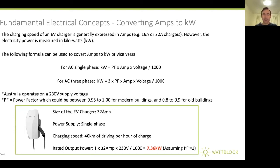PF stands for power factor. In a modern building, that's usually between 0.95 and 1.00. Older buildings might be 0.8 or 0.9, and some really bad buildings might have a power factor of 0.6 — which you should be doing something about. The AC single phase formula: kilowatts equals power factor times amps times voltage divided by 1000. For AC three phase: kilowatts equals 3 times power factor times amps times voltage divided by 1000. The worked example shows a rated power output of 7.36 kilowatts, assuming the building is operating at a power factor of one.